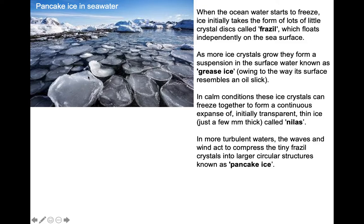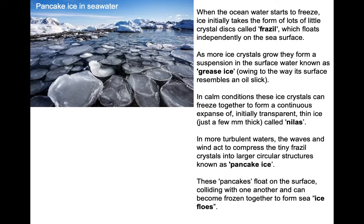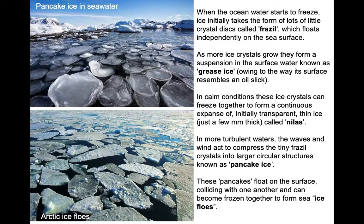These large circular structures are known as pancake ice. You can see some pancake ice near the Antarctic continent in the upper left-hand image. These pancakes float on the surface, colliding with each other and amalgamating together to form what we call ice floes — much larger ice sheets floating on the surface, sometimes several meters thick. These are the floes that polar bears actually like to jump on and take a ride.